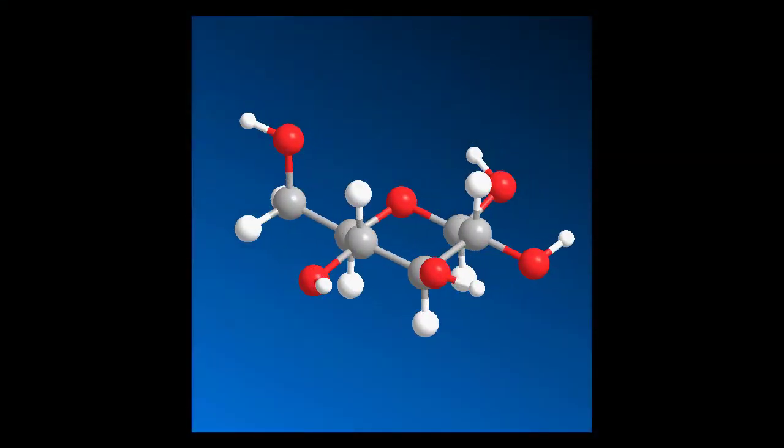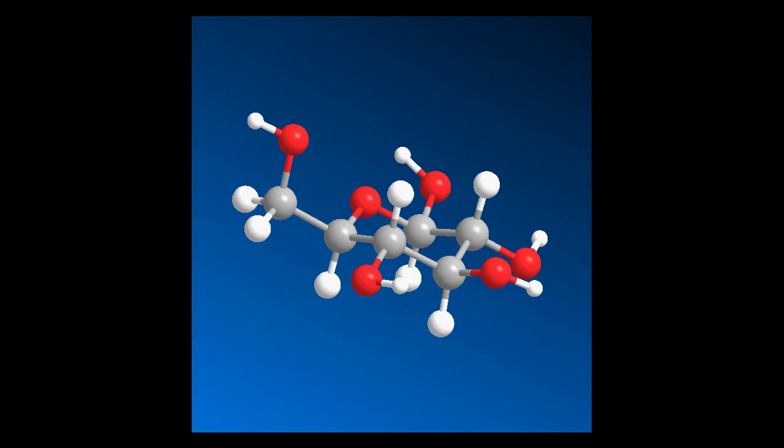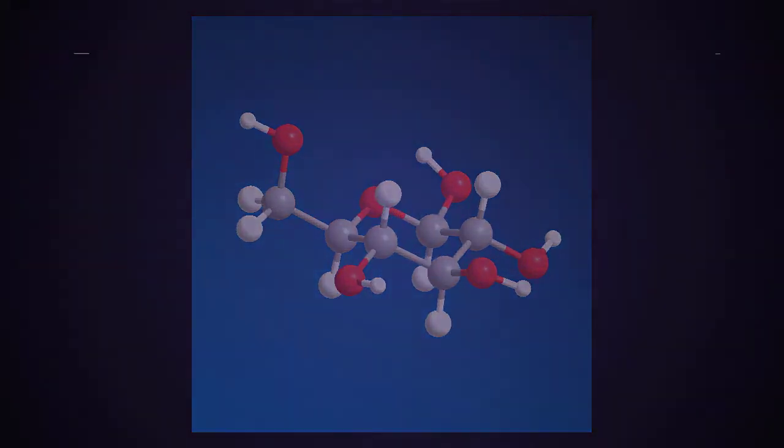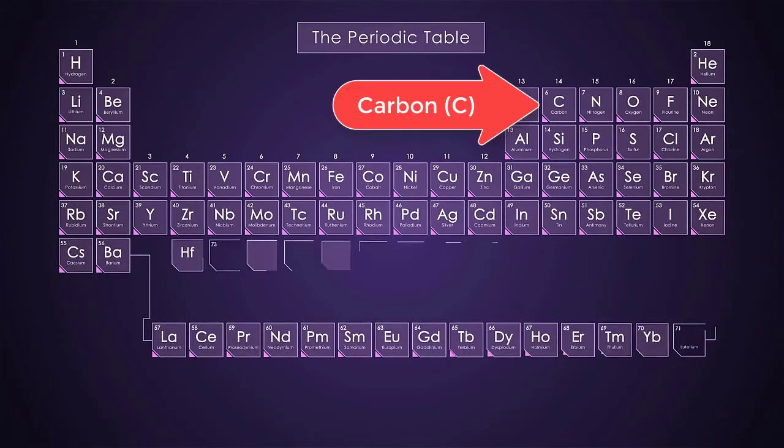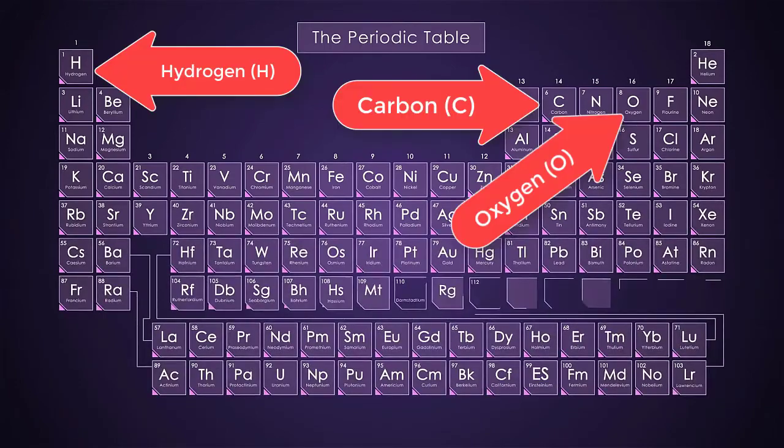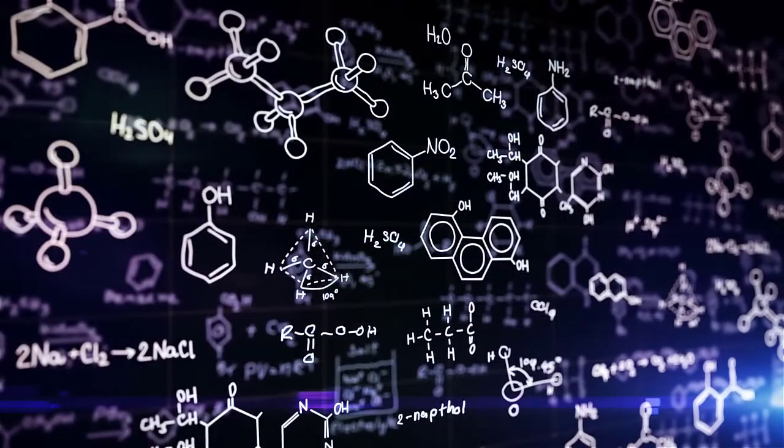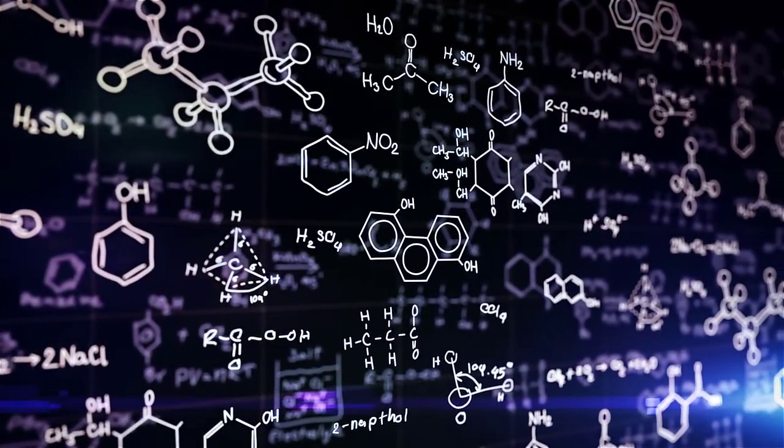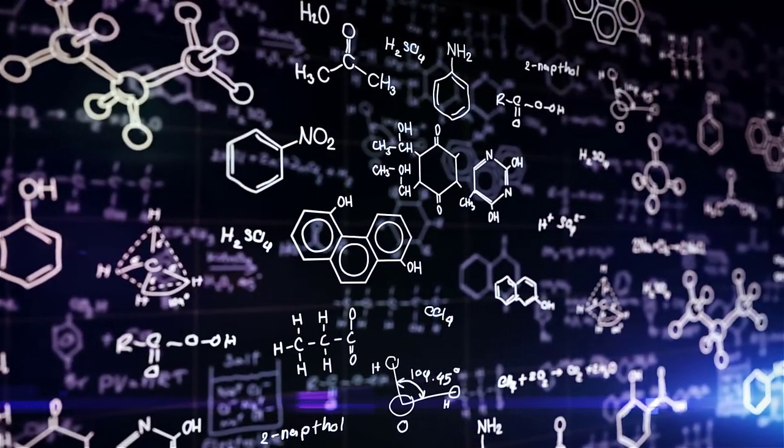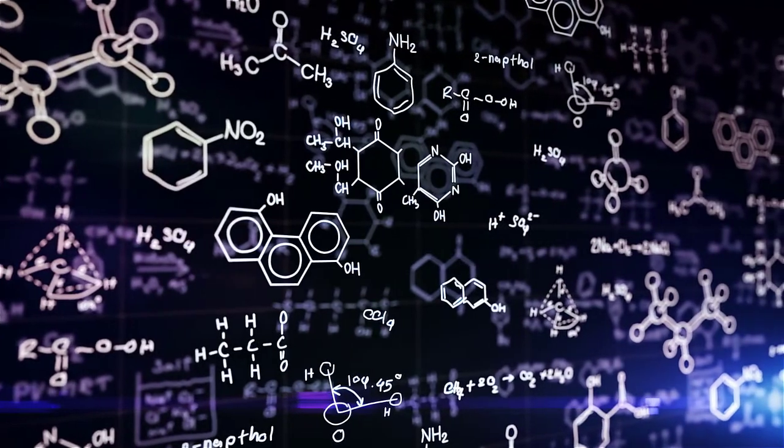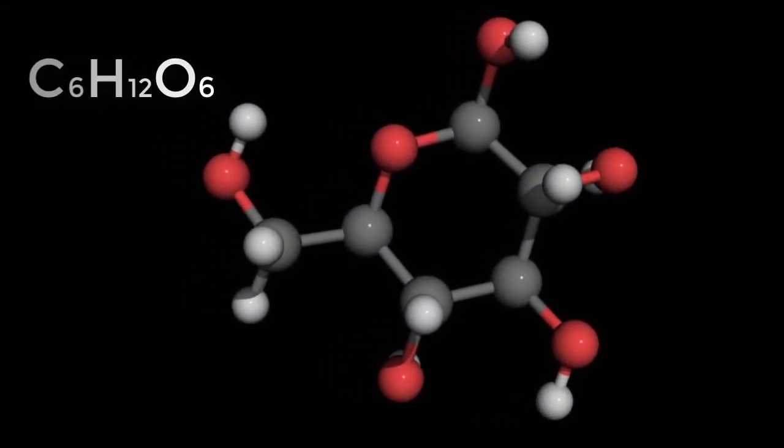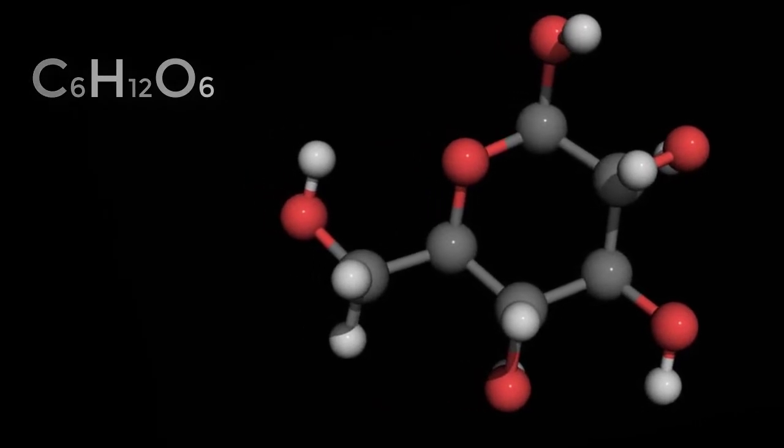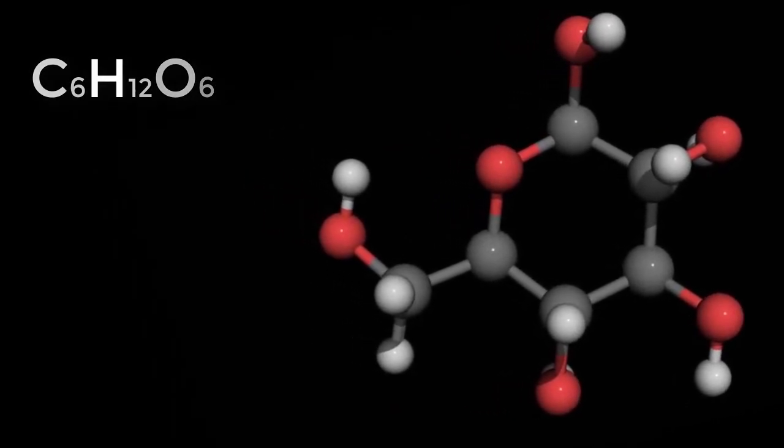A compound is a substance composed of two or more elements joined by chemical bonds. For example, the compound glucose is an important body fuel. It is always composed of the same three elements: carbon, hydrogen, and oxygen. Moreover, the elements that make up any given compound always occur in the same relative amounts. In glucose, there are always six carbon and six oxygen units for every 12 hydrogen units.